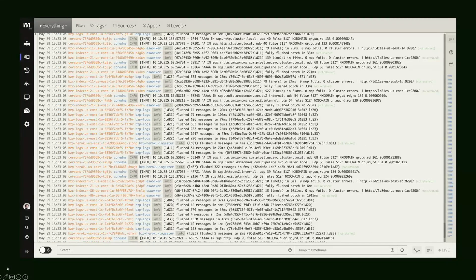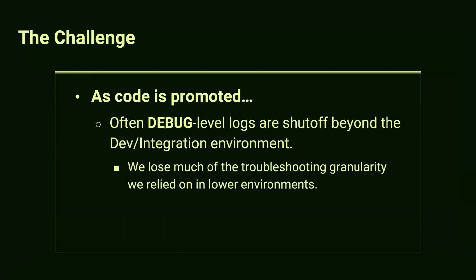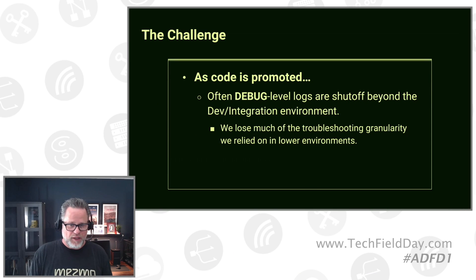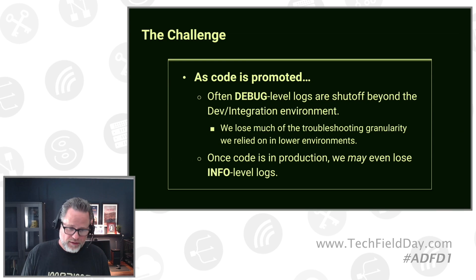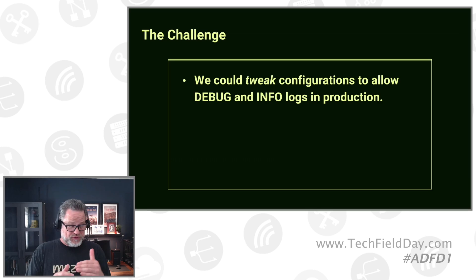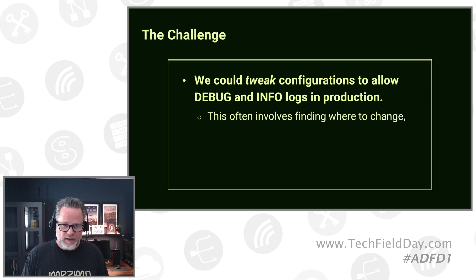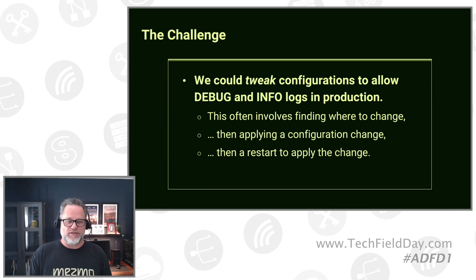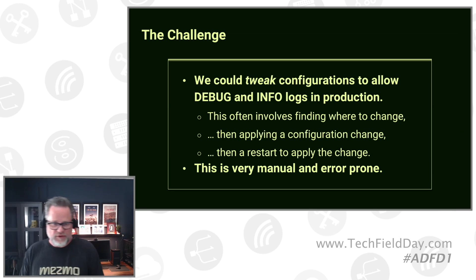Now that we're aggregating our logs, the first thing that typically happens is we turn off debug logs beyond our dev and integration environments. At that point we start to realize we've lost some of the troubleshooting granularity we relied on during development. Some organizations, because their telemetry volumes are so high, have even turned off info-level logs in production — meaning they're only logging warnings and errors. We could go in on an ad hoc basis and tweak configurations, but this involves finding where to make the change, applying a configuration change, and restarting the application. All of this is very manual, very error-prone, and very ad hoc.